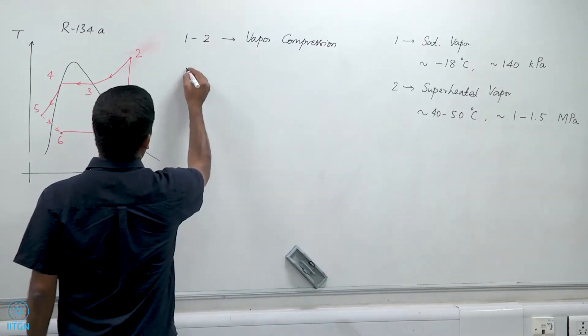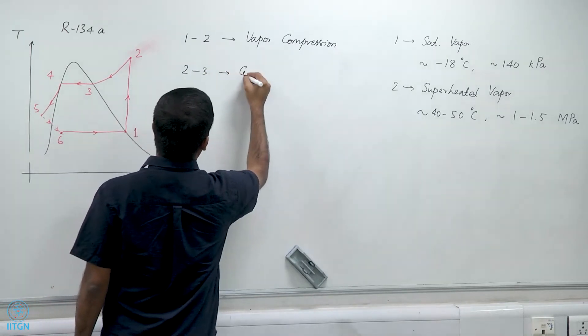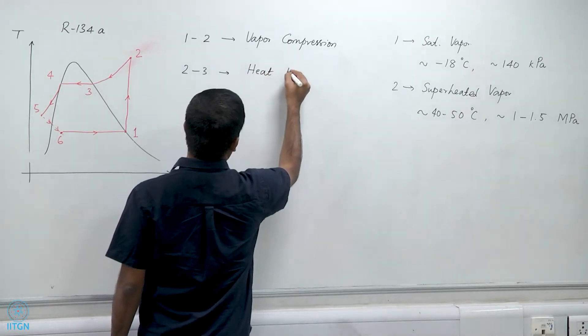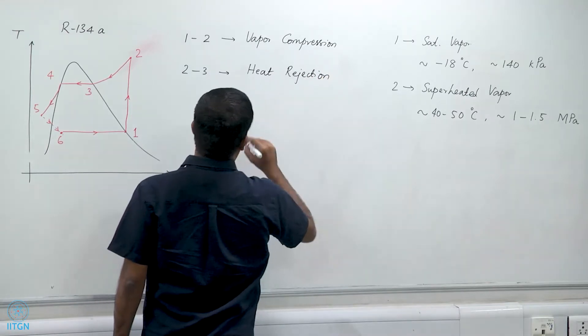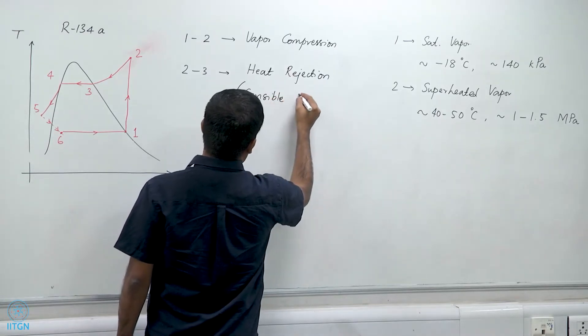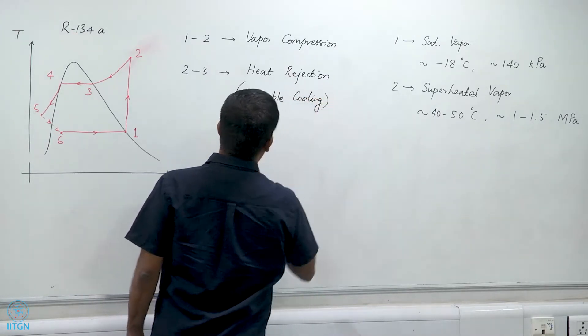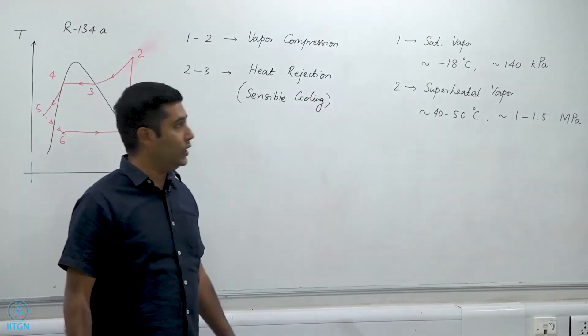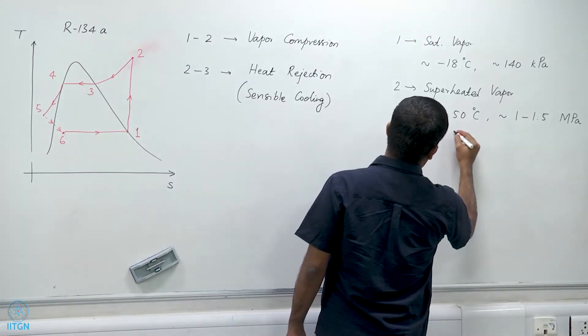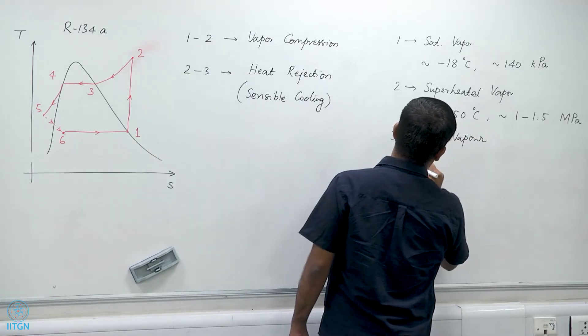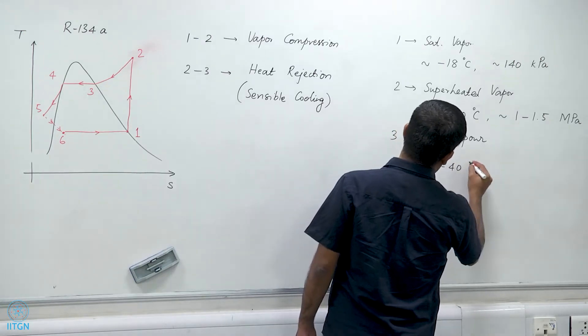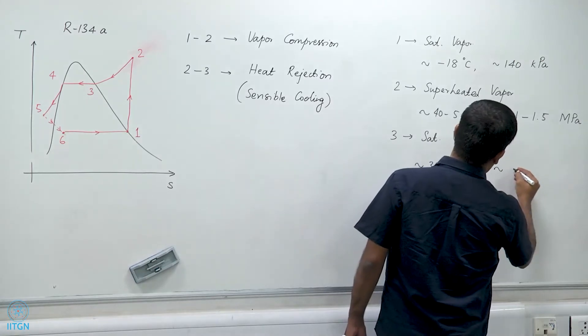Then we have 2 to 3. This is a condensing or heat rejection step in a condenser. This is sensible cooling because this happens when there is a change in temperature from 2 to 3. So 3 is a saturated vapor at about 35 to 40 degrees Celsius and about 1 to 1.5 megapascals.